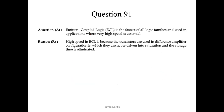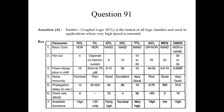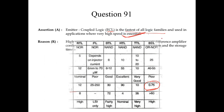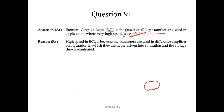Question 91. ECL (emitter coupled logic) is the fastest of all logic families and used in applications where very high speed is essential. From the table used in question 75, the propagation delay of ECL is 0.75 ns, which is minimum, meaning it is the fastest. The reason: high speed in ECL is because transistors are used in a difference amplifier configuration where they are never driven into saturation, eliminating storage time. Both are correct — we choose option 1.